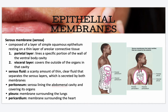Your serous membrane is composed of a layer of simple squamous epithelium resting on a thin layer of areolar connective tissue. You have two layers: the parietal layer and the visceral layer. The visceral layer covers the outside of the organs in that cavity, while the parietal layer lines a specific portion of the wall of the ventral body cavity. Serous fluid is a scanty amount of thin, clear fluid that separates the serous layers, secreted by both membranes. The peritoneum is the serous membrane lining the abdominal cavity and covering its organs.